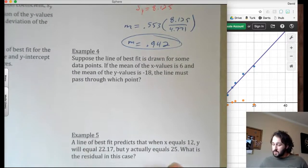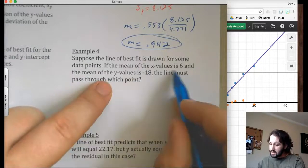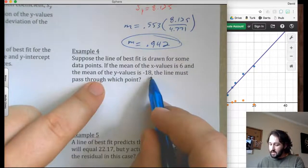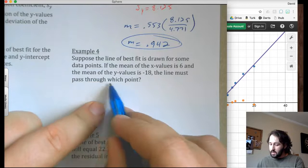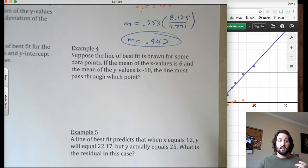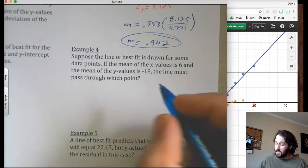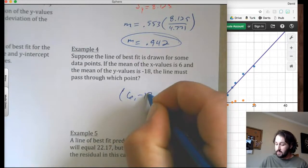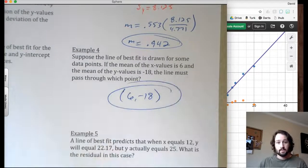Alright. Suppose the line of best fit is drawn for some data points. If the mean of the x is 6 and the mean of the y is negative 18, the line must pass through which point? I mean, again, the line of best fit has to pass through the mean of the x and has to pass through the mean of the y. So it has to pass through 6, negative 18. That's it.